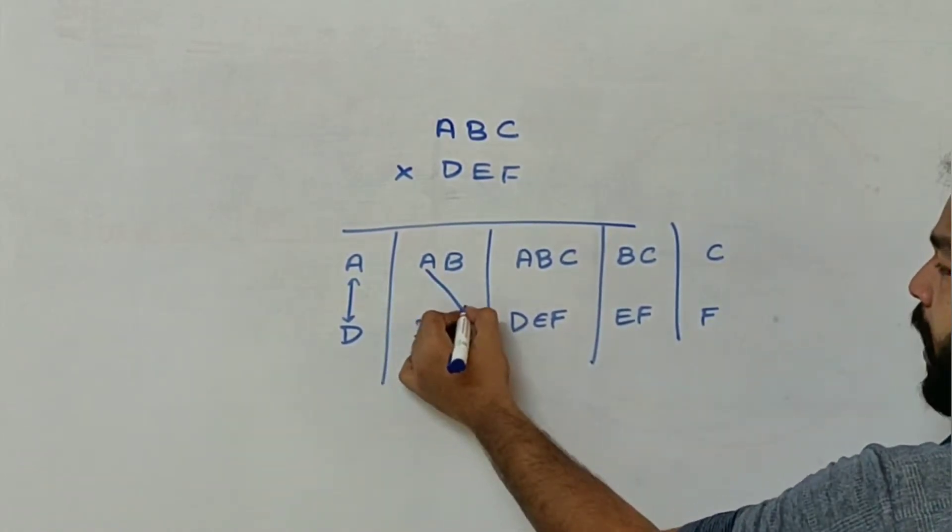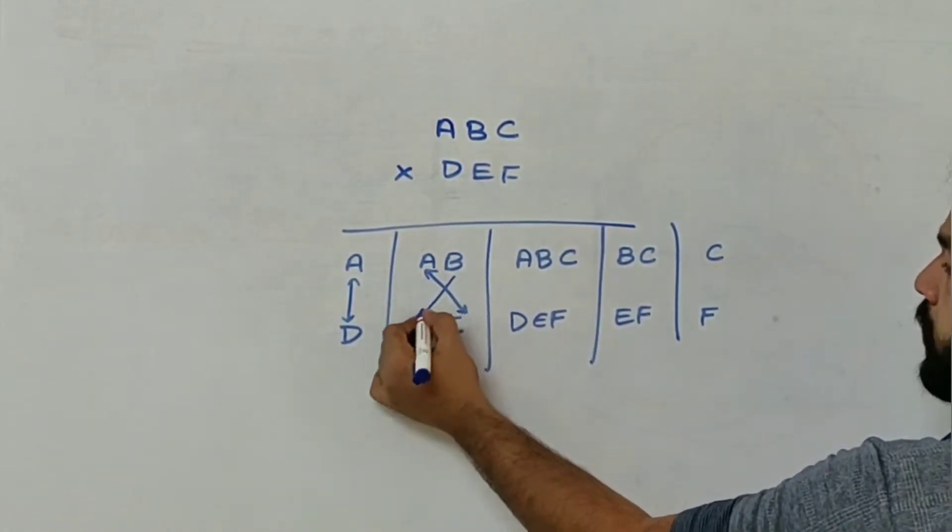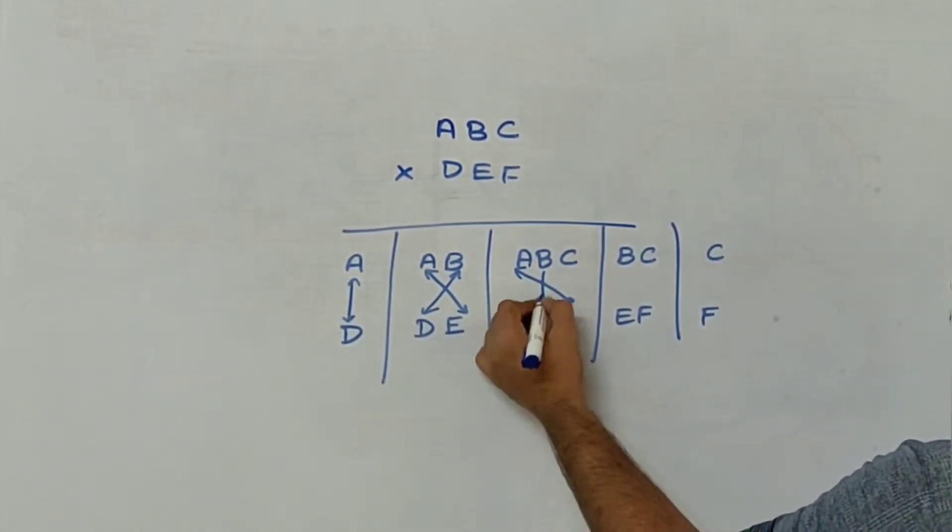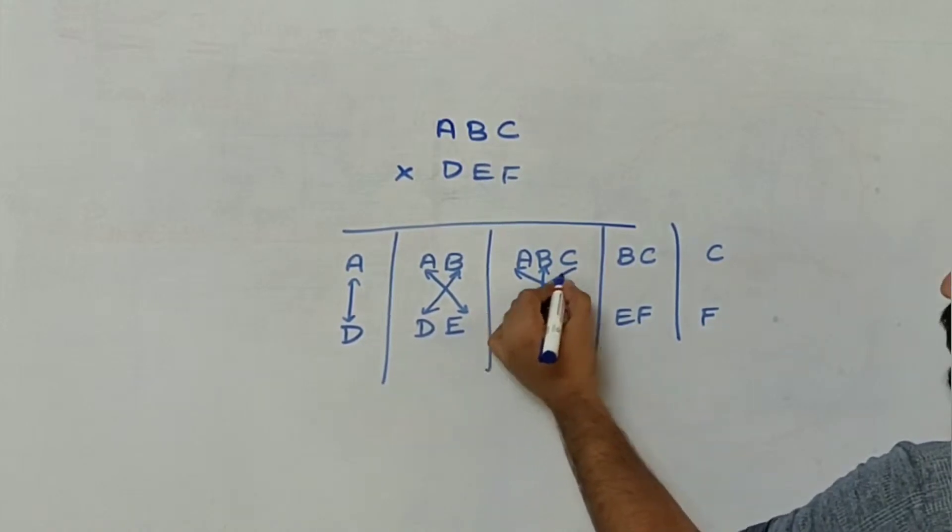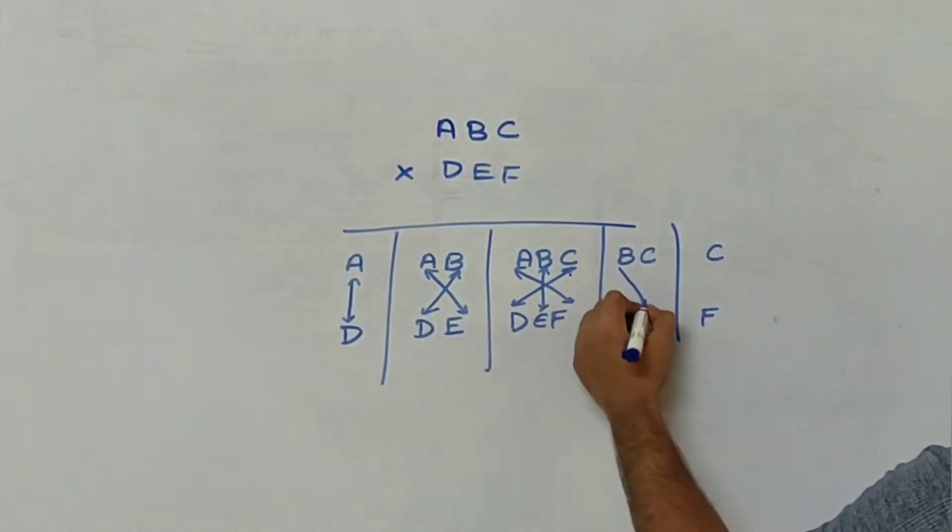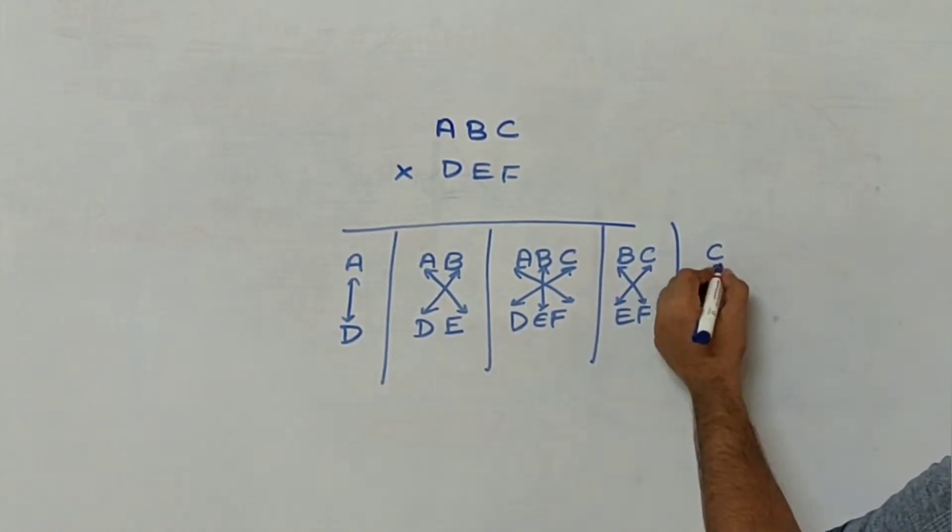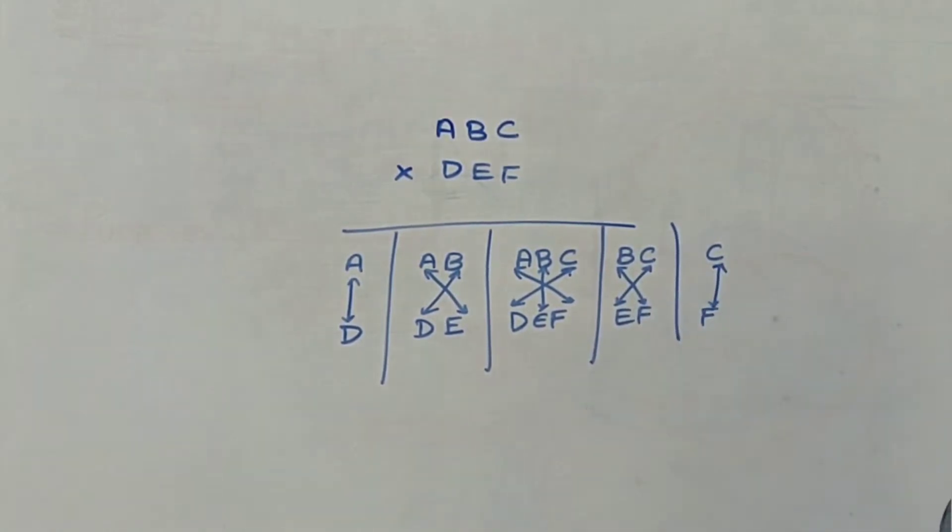So here you have to multiply A into E plus B into D. Here you have to multiply A into F, B into E, C into D. Here you have to multiply B into F and C into E and add them, and here you have to multiply C and F. This part will be more clear when we see our examples. So let us start.